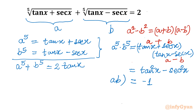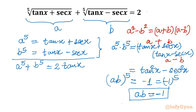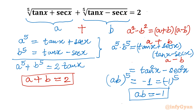So the left-hand side is (AB)⁵ = −1, which can be written as (−1)⁵. Equating both sides, we conclude AB = −1. Returning to our original equation after substitution: A + B = 2. So we now have two equations: A + B = 2 (equation 1) and A × B = −1 (equation 2).